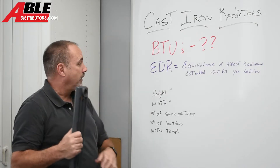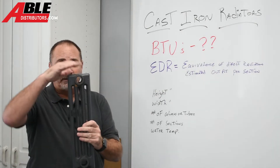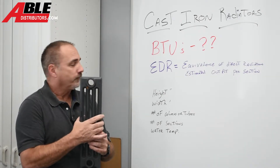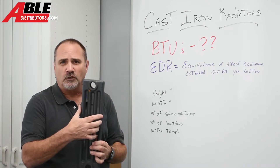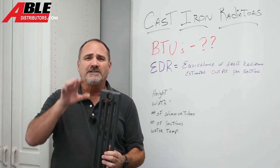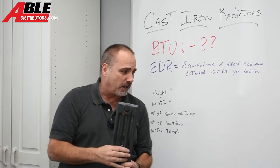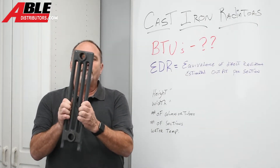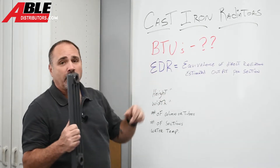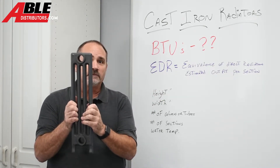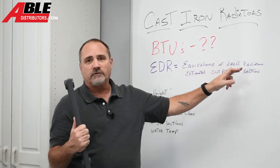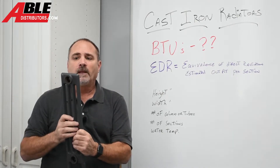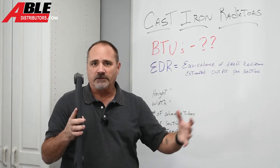When you're calculating this out, you're going to have to know the height, the width — and the width is out from the wall — and the number of columns or tubes, just so you can find something in the charts as close to what you're looking at as possible. You'll find the EDR value of one section — the equivalence of direct radiation — which is what that one section can radiate to the air and the room, and then you multiply that by how many sections you have.